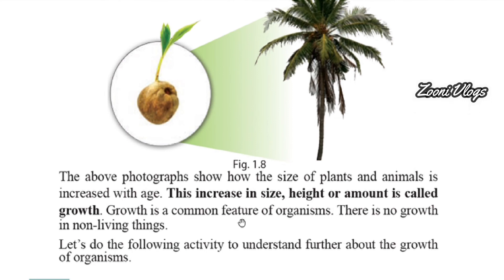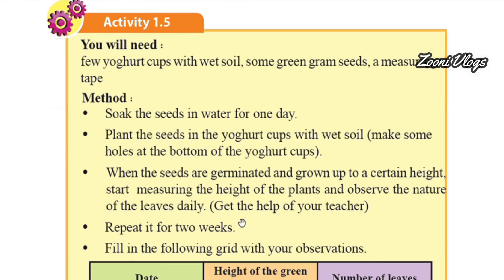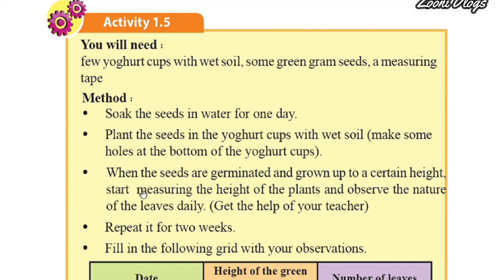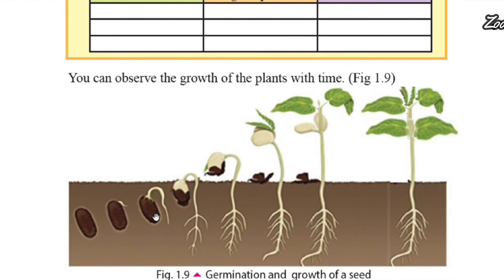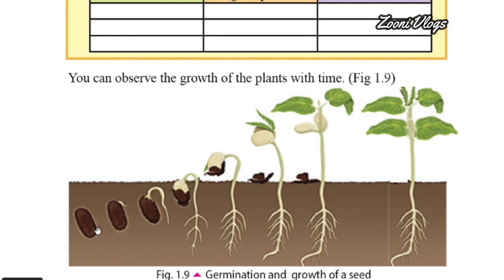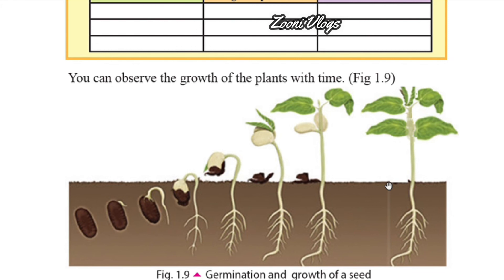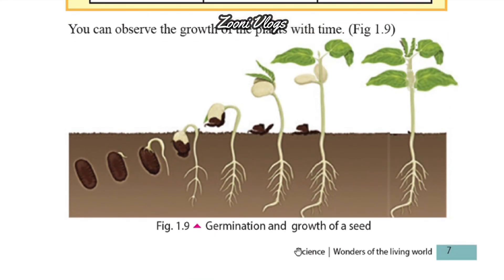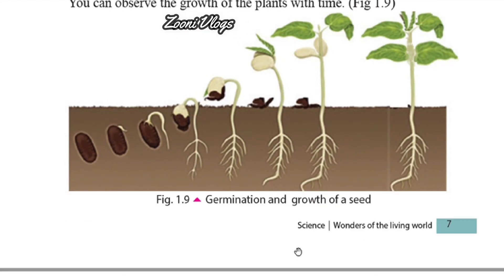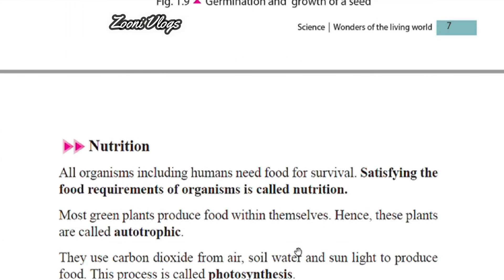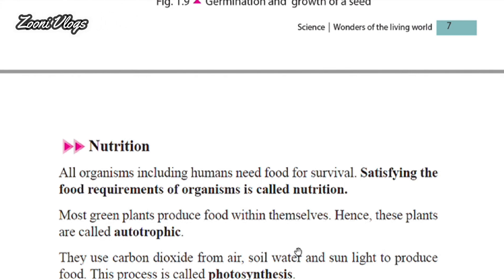Let's do the following activity to understand further about the growth of organisms. Sow the seeds in water for one day, then plant the seeds in yogurt cups with wet soil. When observing this picture carefully, you can see the differences and the growth of the plant. At the beginning there is a small seed and over time it changes until finally we can see a big plant — we call this germination and growth of a seed. Under this topic we have to discuss many more things, including nutrition of a plant, photosynthesis, autotrophic nutrition, and more. Hope to come with that in the next session. See you soon.